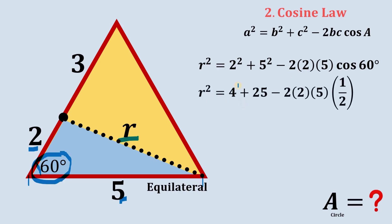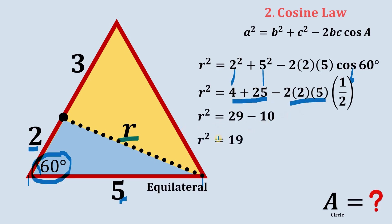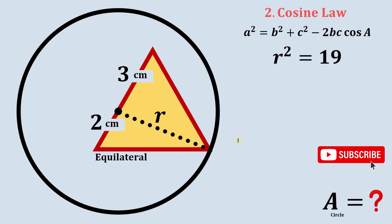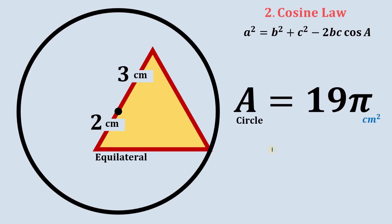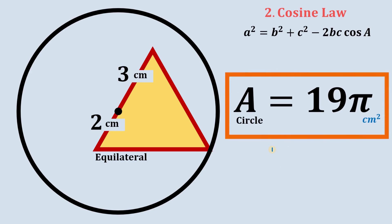Simplifying: r² = 4 + 25 − 2×2×5×cos(60°). Since cos(60°) = 1/2, we have r² = 29 − 10 = 19. We know r² = 19 and the area of a circle is πr², therefore the area of the circle is 19π square centimeters. Using our second method we get the same result.